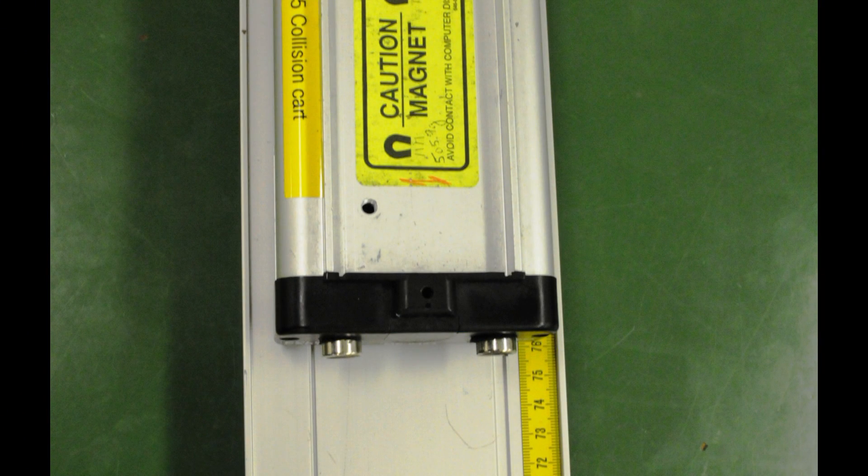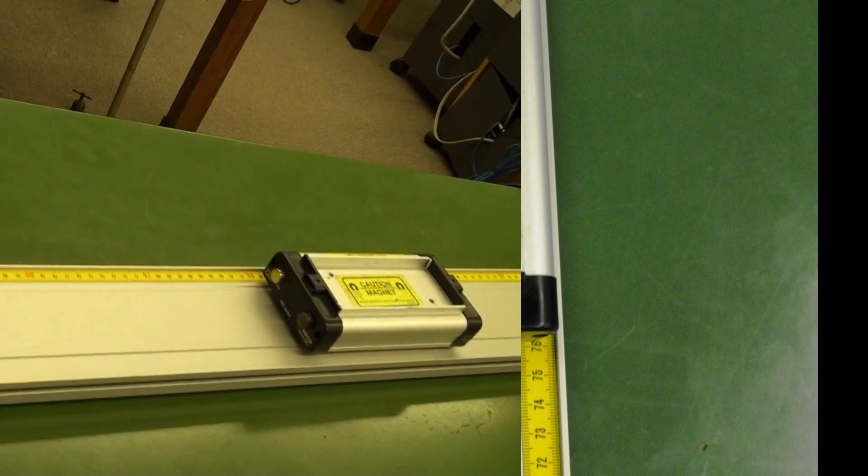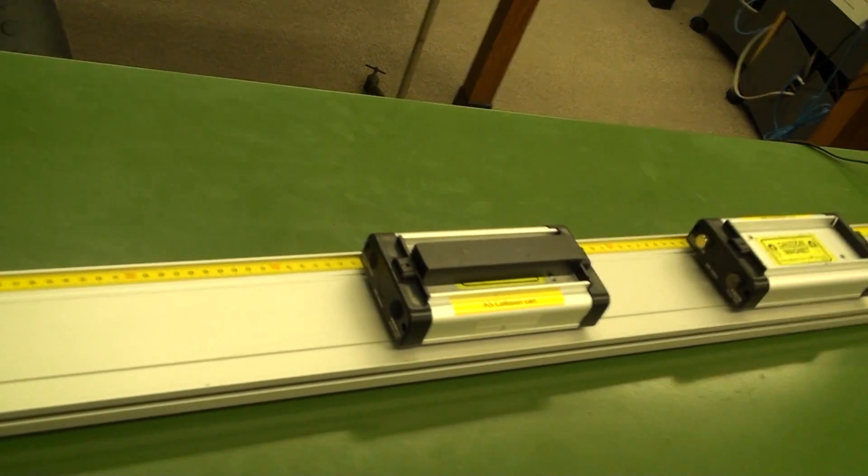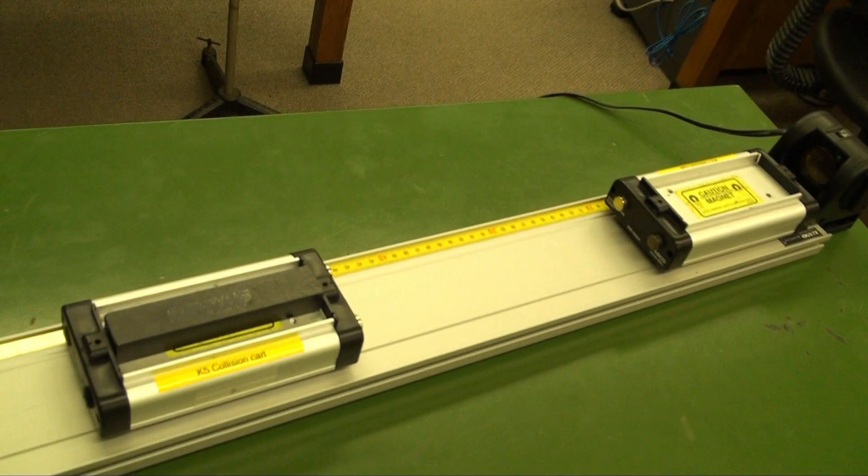Experimentally, you can approach the ideal of an elastic collision by fitting the carts with button magnets with like signs facing each other. Then they bounce without touching. Please don't allow the carts to hit the motion sensors.